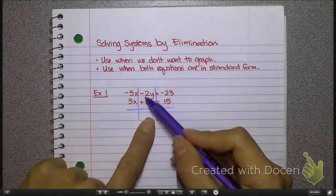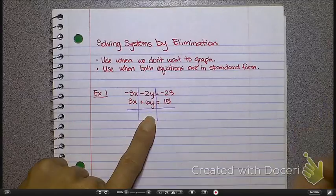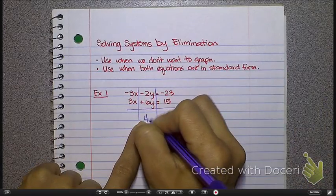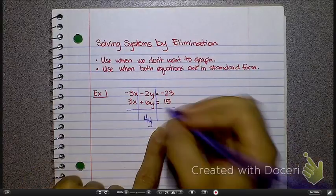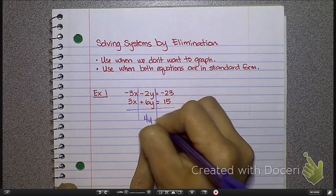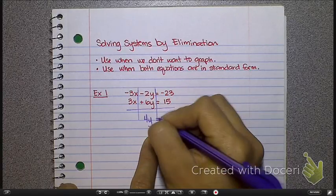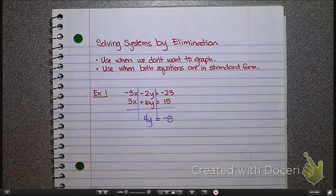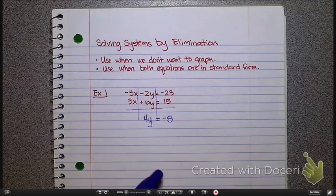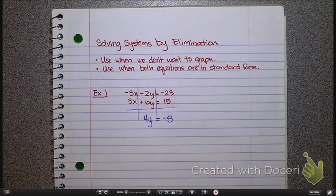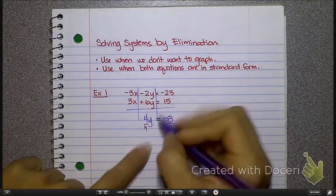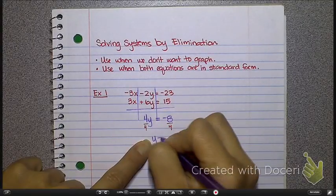What is negative 2 and positive 6 when I put them together? Positive 4. And then what is negative 23 and 15? That's negative 8. Now I'm going to drop down my equals sign. So now what I have here is I have an equation with only one variable. And this is pretty easy to solve. How do I solve this? Yeah, divide by 4. Now that I've divided by 4, I can get the value of y. y is negative 2.